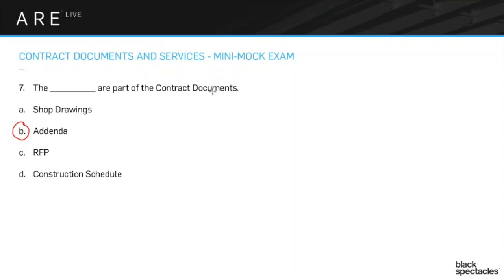Contract documents is an interesting term. Contract documents essentially means: when you produce a set of drawings — both the drawing set and the project manual — what you're making is somebody else's contract. You're making the materials that will define the contract between the owner and the general contractor. That's why we call them contract documents — you're aiming to make their contract.